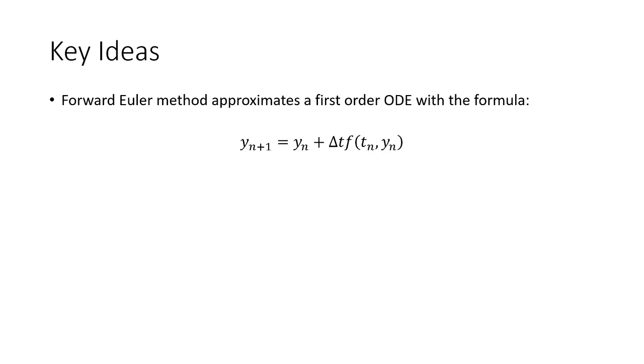So the key takeaway here is that for the forward Euler method, we're going to use the following formula to approximate our next solution, or the solution at the next time step. And this is a first order accurate method with a local error on the order of Δt squared.